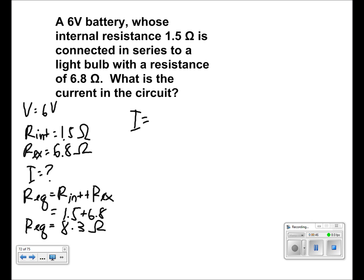We use the formula I equals V over equivalent resistance to find the current. We plug in the numbers and we get 6 over 8.3, and we get a final answer of 0.72 amps.